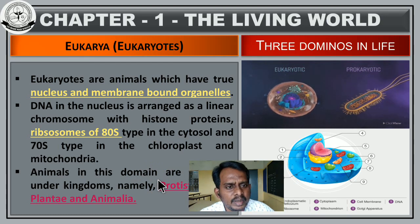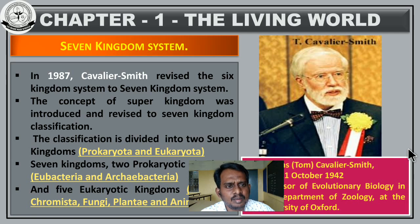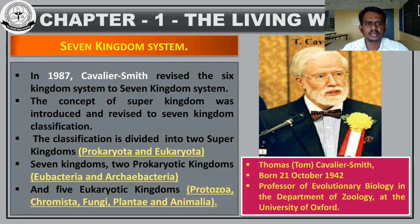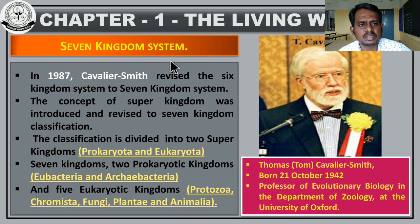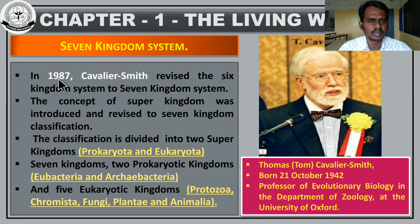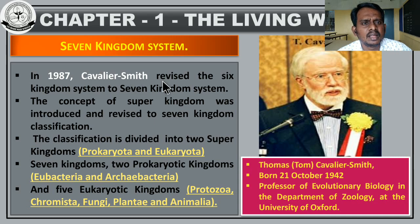In this class we are going to learn about the seven kingdom classification, another topic in chapter one — The Living World. This classification was introduced by Cavalier Smith. In 1987, Cavalier Smith revised the six kingdom classification to the seven kingdom classification.